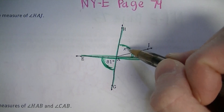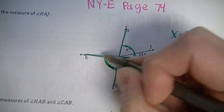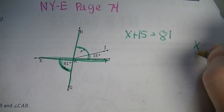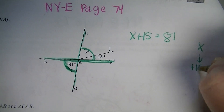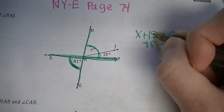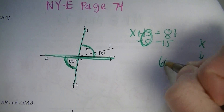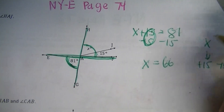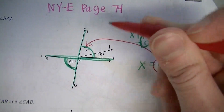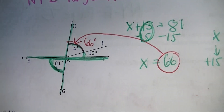So when I set up my equation, I would go X plus 15, and that sum would equal 81 because of that vertical angle relationship. From there, we can solve for X. The inverse operation of adding 15 is to subtract 15, and that's what you'll do to both sides. 15 take away 15 is 0. 81 take away 15 is 66. So X is equal to 66, but you're not done yet, because remember you have to substitute it back into the picture. This angle measurement right here is 66 degrees.